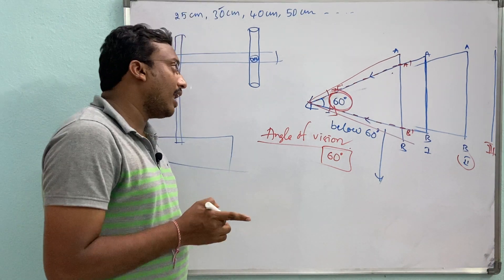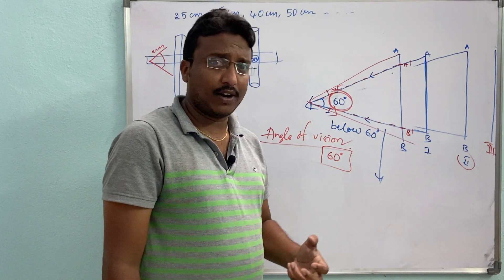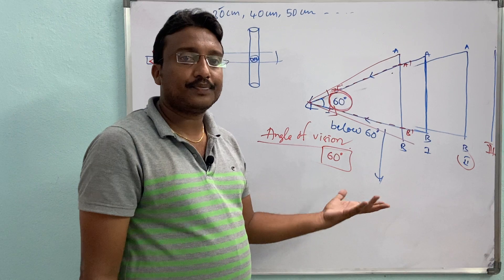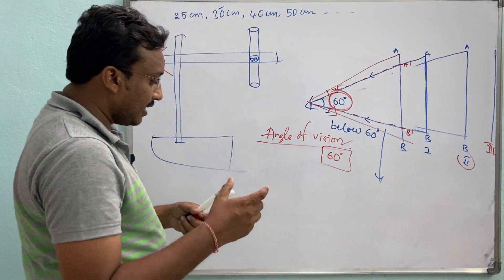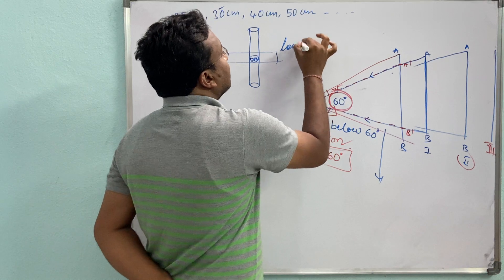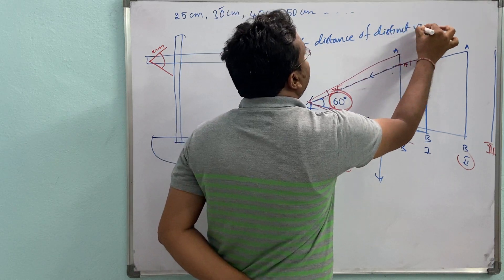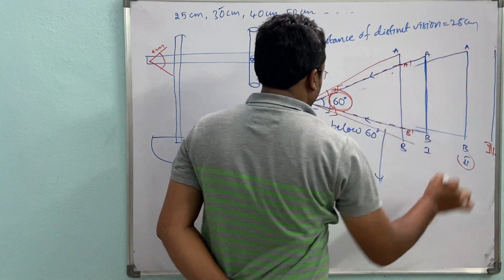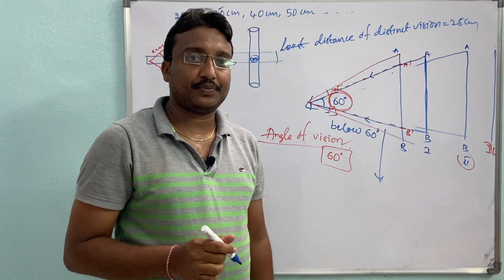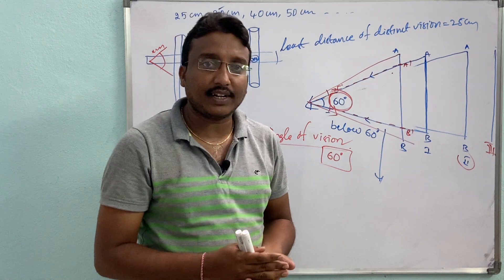Just like the least distance of distinct vision, the angle of vision also varies from person to person. In today's class we discussed two important values: least distance of distinct vision is 25 centimeters, and angle of vision is 60 degrees. Why these vary from person to person, we will discuss in our next class. Thank you.